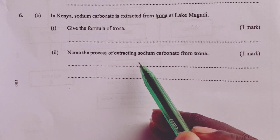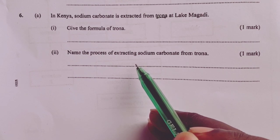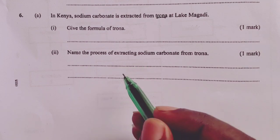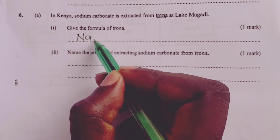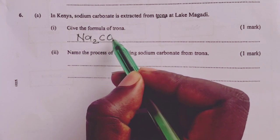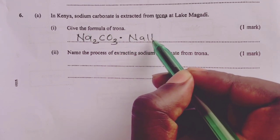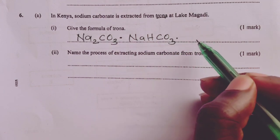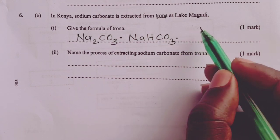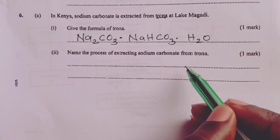Part A, Roman 1, we were asked to give the formula of trona. As we know from form 2, trona is a double salt of sodium carbonate, sodium hydrogen carbonate, and water of crystallization. Now, the number of molecules of water of crystallization...